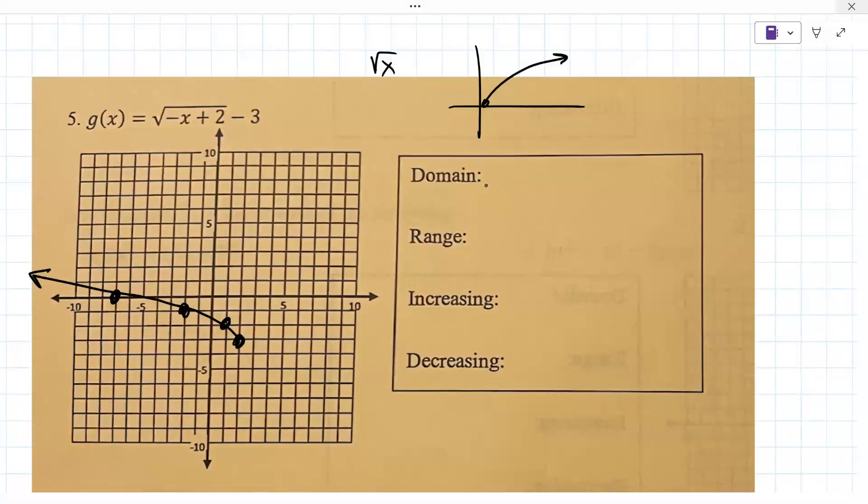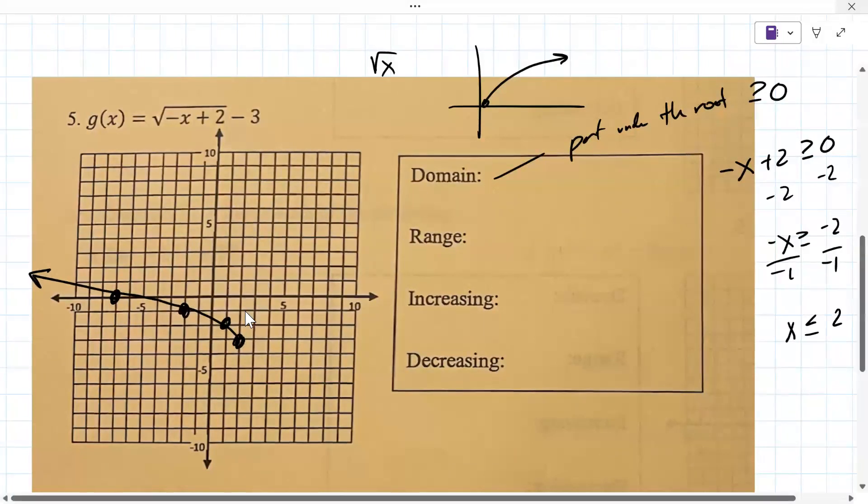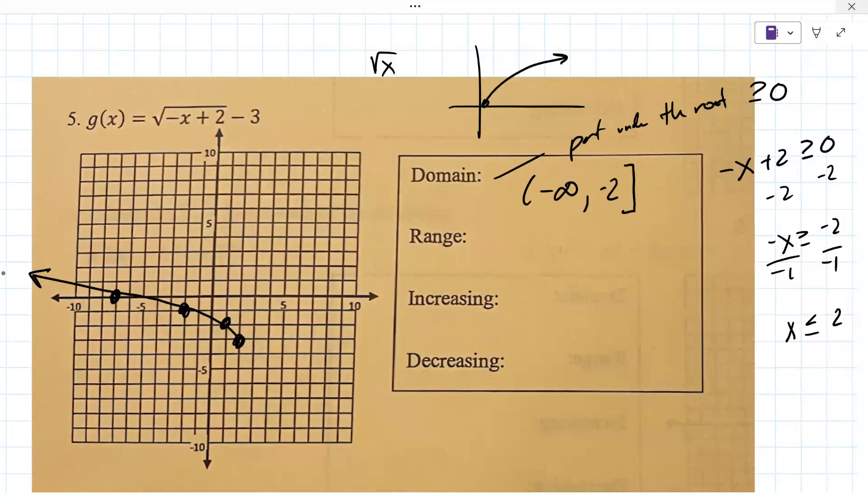Generally for the domain, you'd set the part under the root, greater than or equal to 0. So you'd set minus x plus 2, greater than or equal to 0, and solve for x. You'd subtract 2 from both sides, negative x greater than or equal to negative 2, divide by negative 1. Remember that flips it, x is less than or equal to 2. That's consistent with our graph here. The x values are all 2 and smaller, or basically everything from minus infinity to 2. This time it includes 2, so there's a bracket.